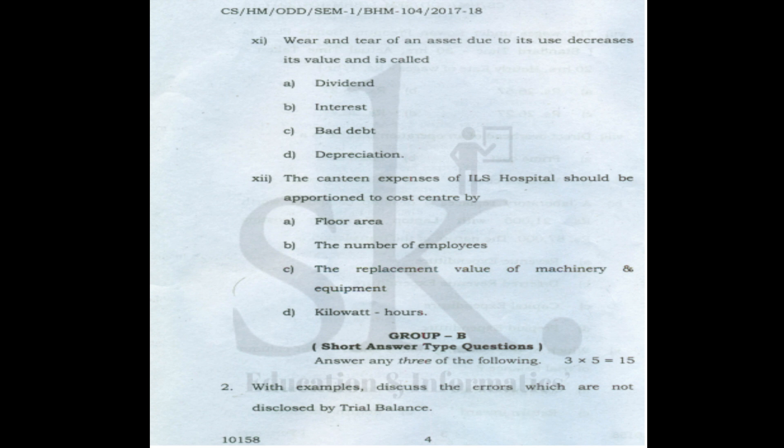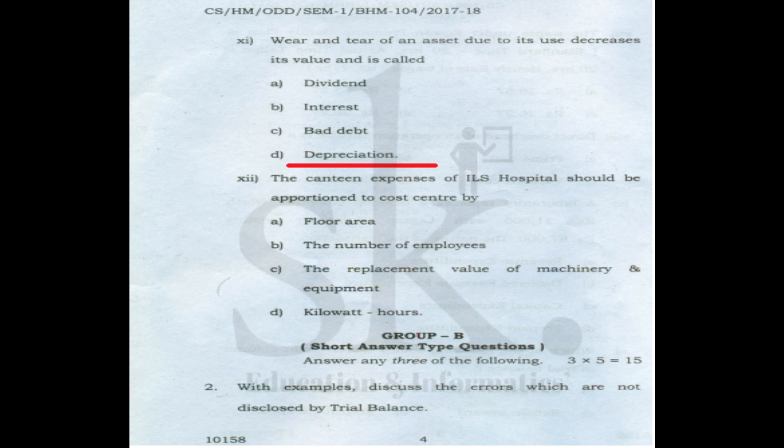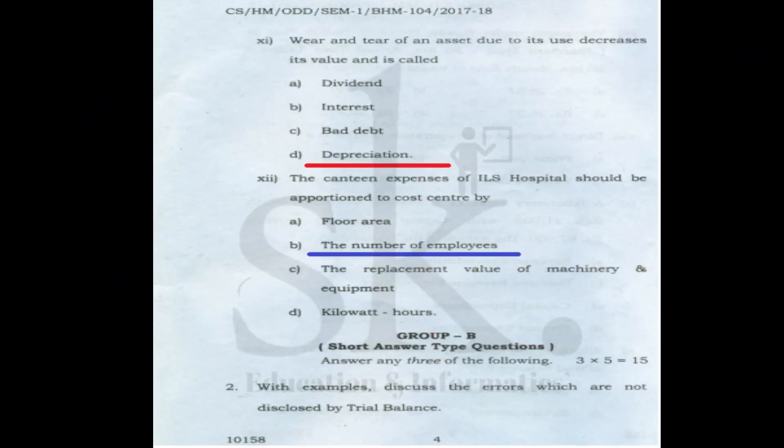Question number eleven: wear and tear of an asset due to use decreases its value — this is called depreciation, which results from wear and tear or obsolescence. The correct option is D.